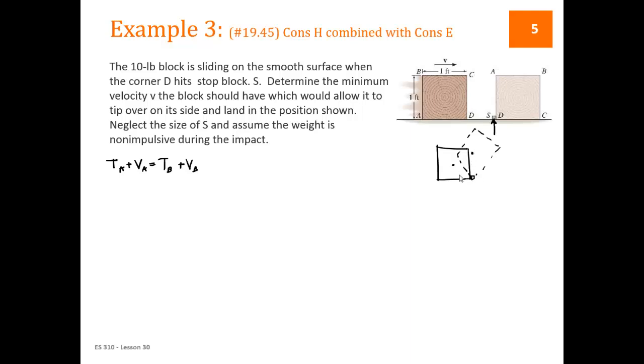So if we're looking at conservation of energy, we know that TA plus VA equals TB plus VB. Now what do we mean by A and B? So A is this block right after it collides with the box at S. So that's this box. And it has hit A or S already, so it's starting to rotate. And it's going to rotate upwards, and if it's going to flip all the way over, it has to rotate up to at least the point where the center of mass is directly over, is directly straight up in the air.